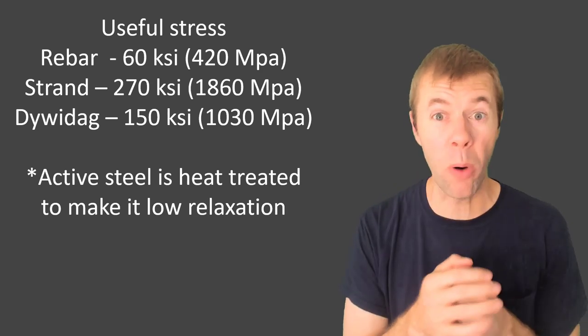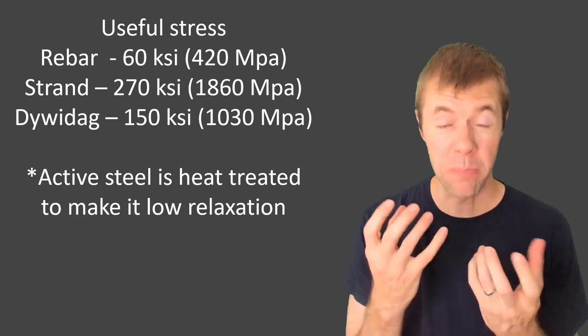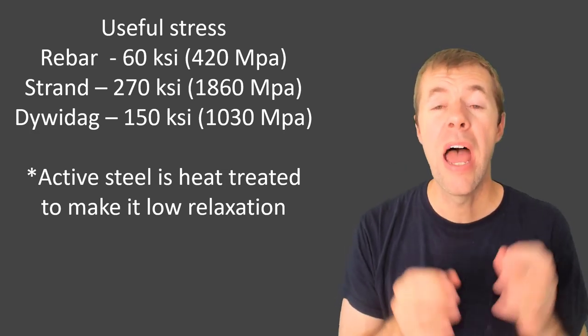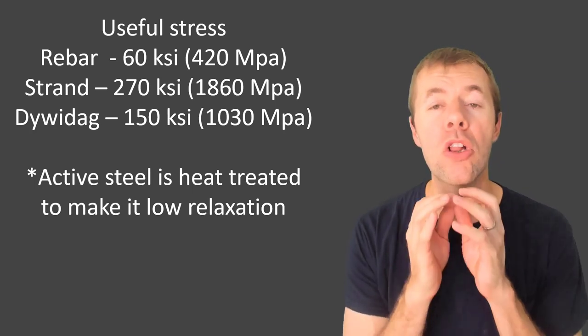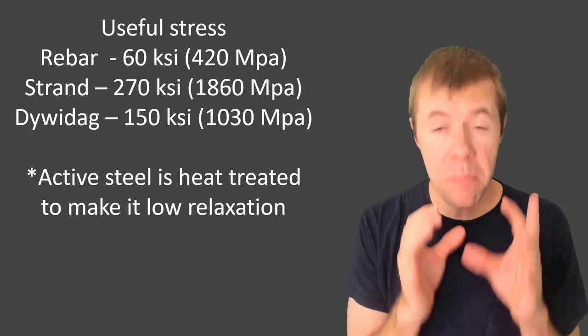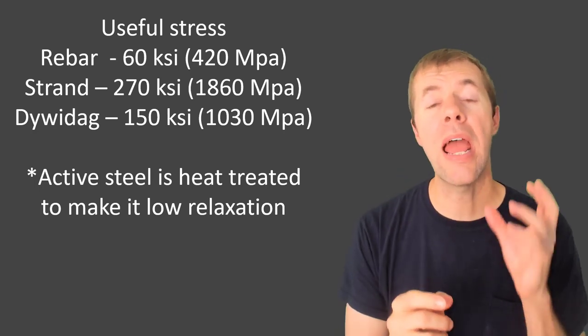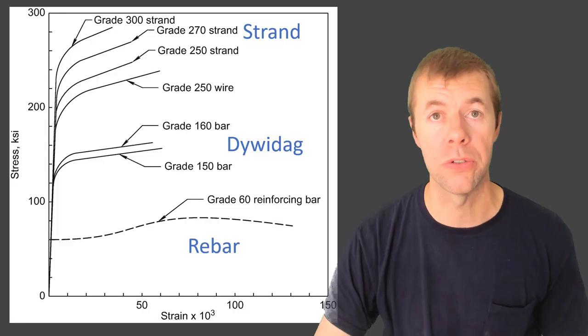The useful stresses for these materials are all over the map. I've showed you rebar. That's the mild reinforcement, 60 KSI. The active stuff is much higher strength, 270 to 150 KSI. And these active steels are heat treated to make them low relaxation. That means under a constant strain, you'll get a constant stress. And that doesn't always happen with all steels.